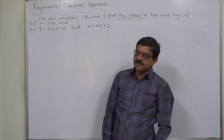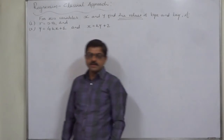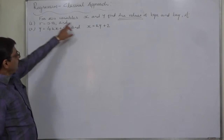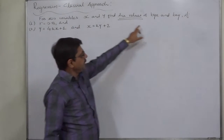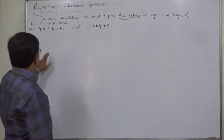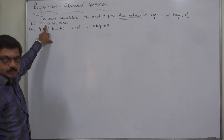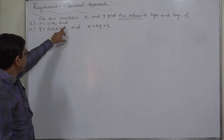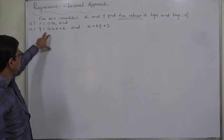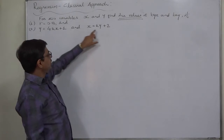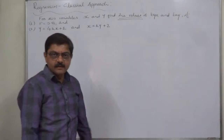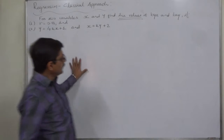Hello friends. In this regression problem for two variables x and y, find the values of byx and bxy if the coefficient of correlation is 0.8 and the lines of regression are y = 4kx + 1 and x = ky + 2. We know that from these two lines of regression we can find byx and bxy.